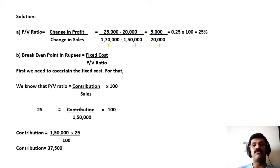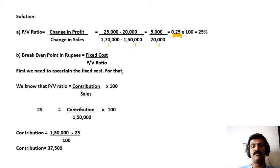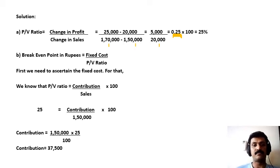Now, 5,000 divided by 20,000, we will get 0.25 as the decimal value. And if we convert it into percentage form, it comes to 25 percent. So the PV ratio is 25%.